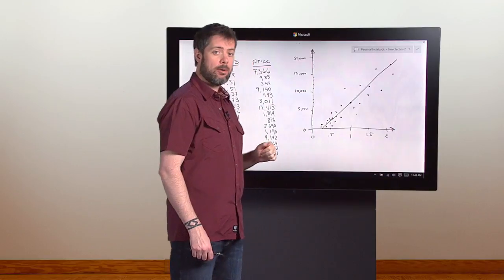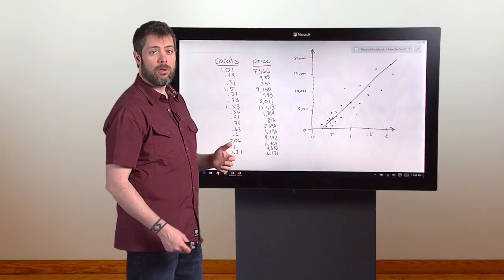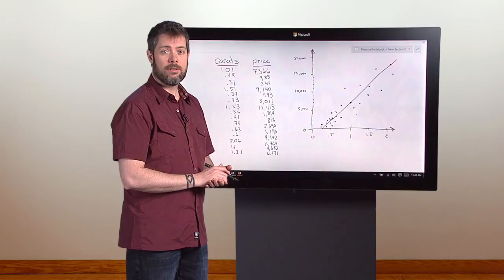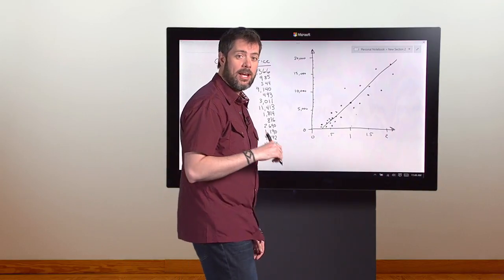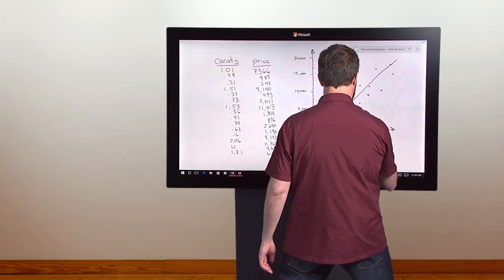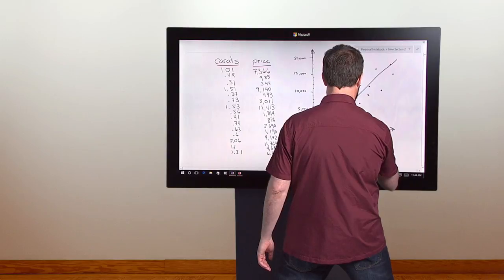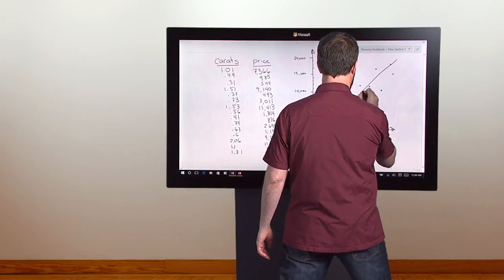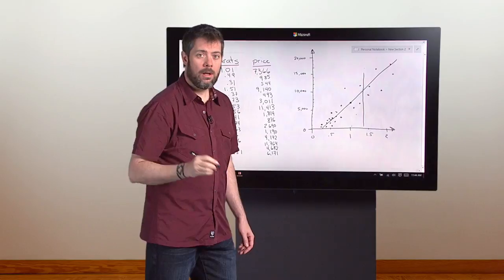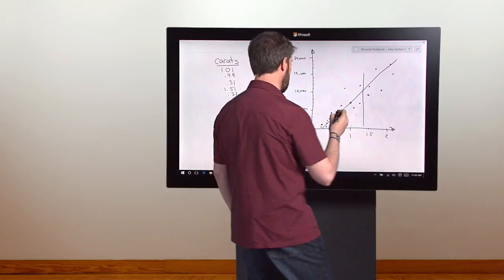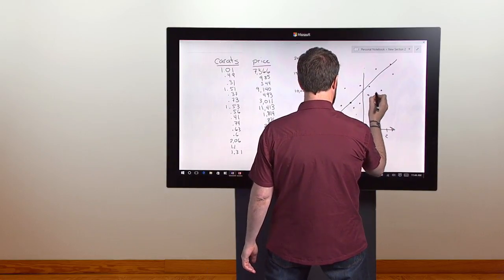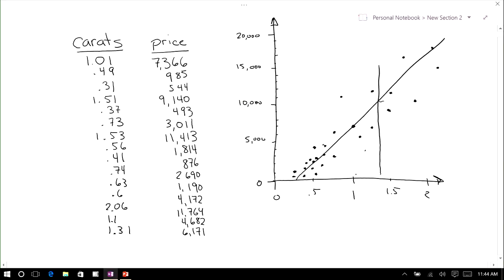Now we have a model and we ask it our question, how much will a 1.35 carat diamond cost? To answer our question, we eyeball 1.35 carats and draw a vertical line. Where it crosses the model line, we eyeball a horizontal line to the dollar axis. It hits right at $10,000.